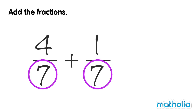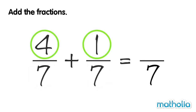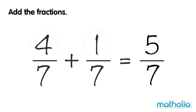To add like fractions, we keep the denominator the same and add the numerators. 4 plus 1 equals 5. So 4 sevenths plus 1 seventh equals 5 sevenths.